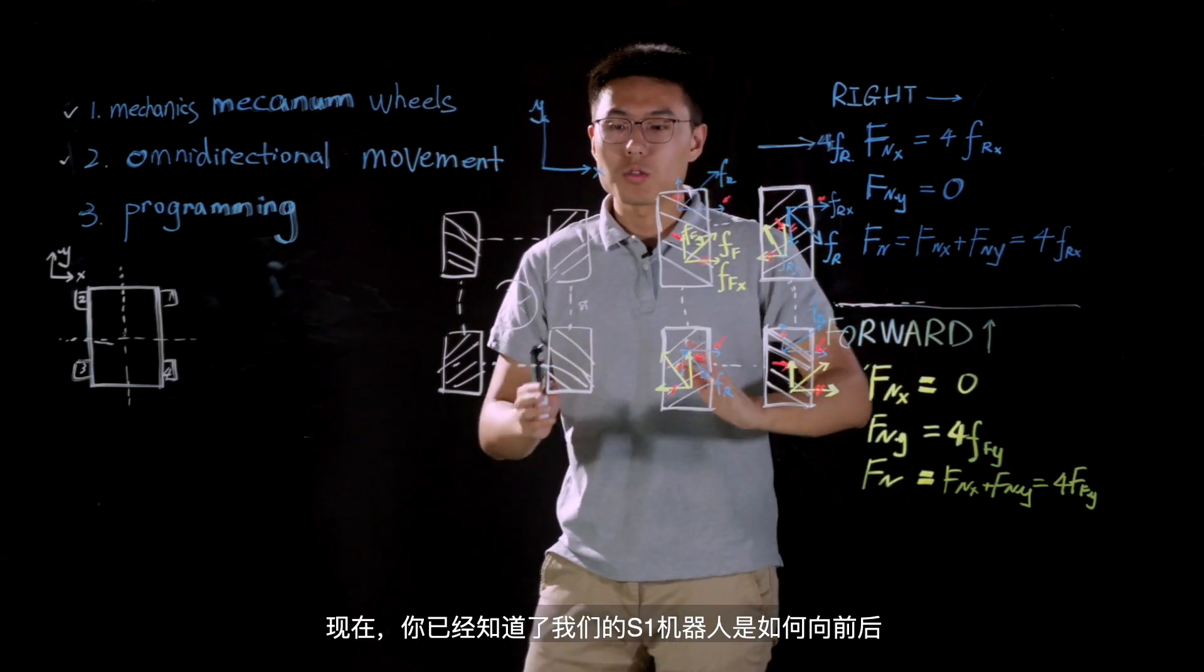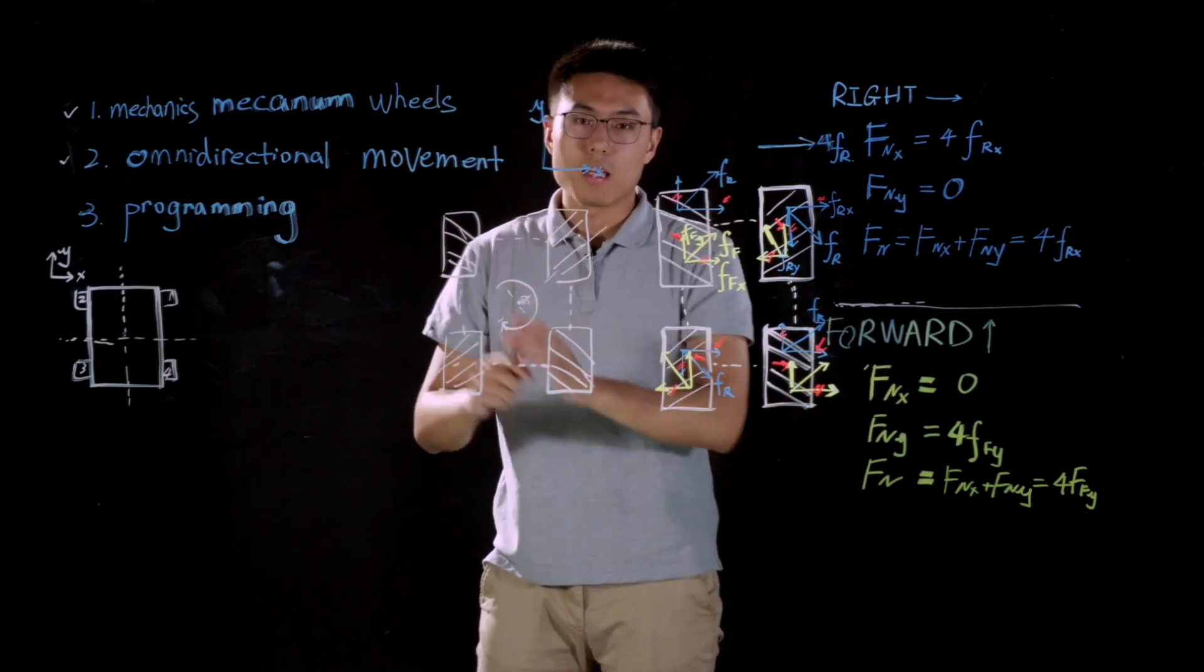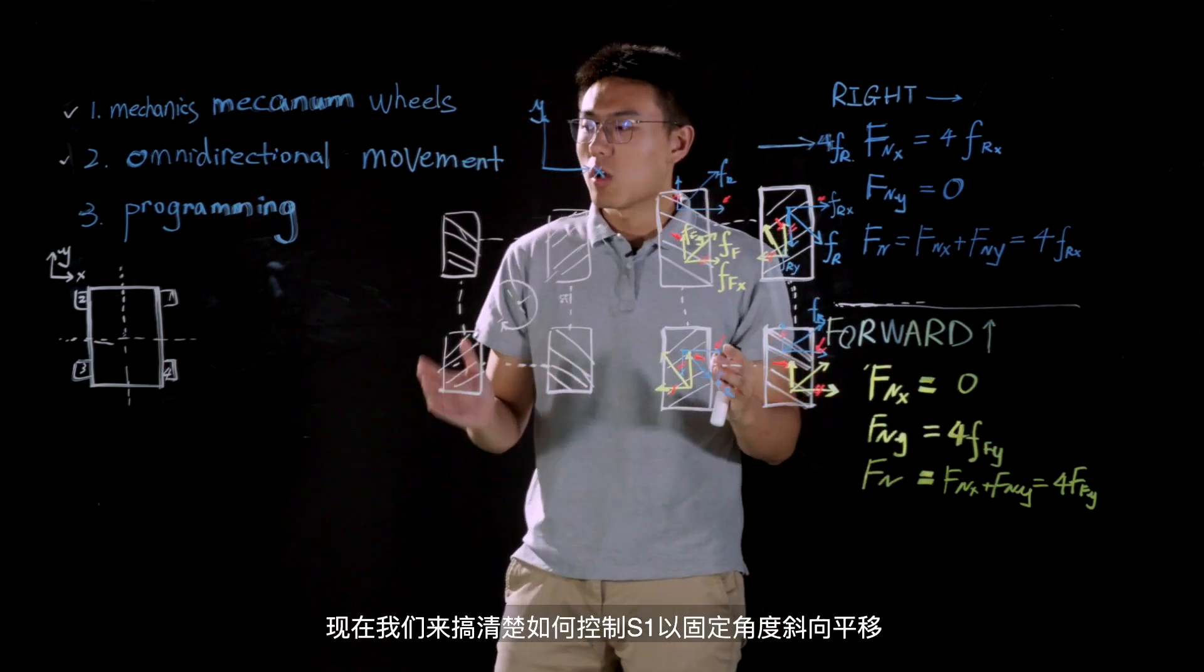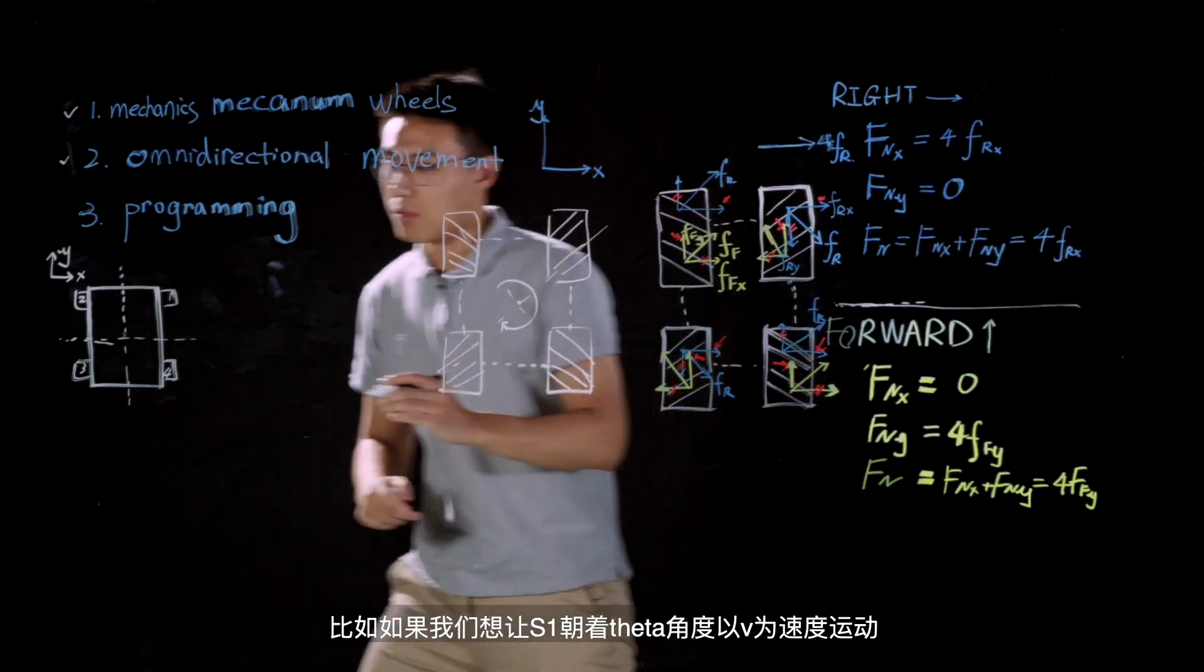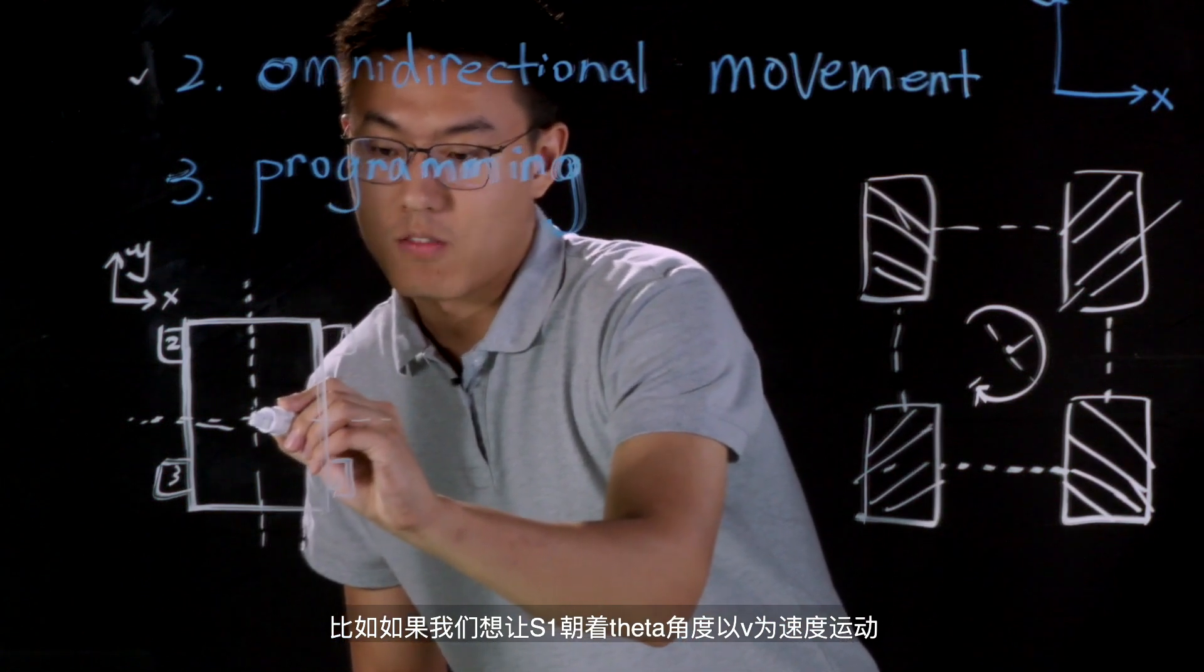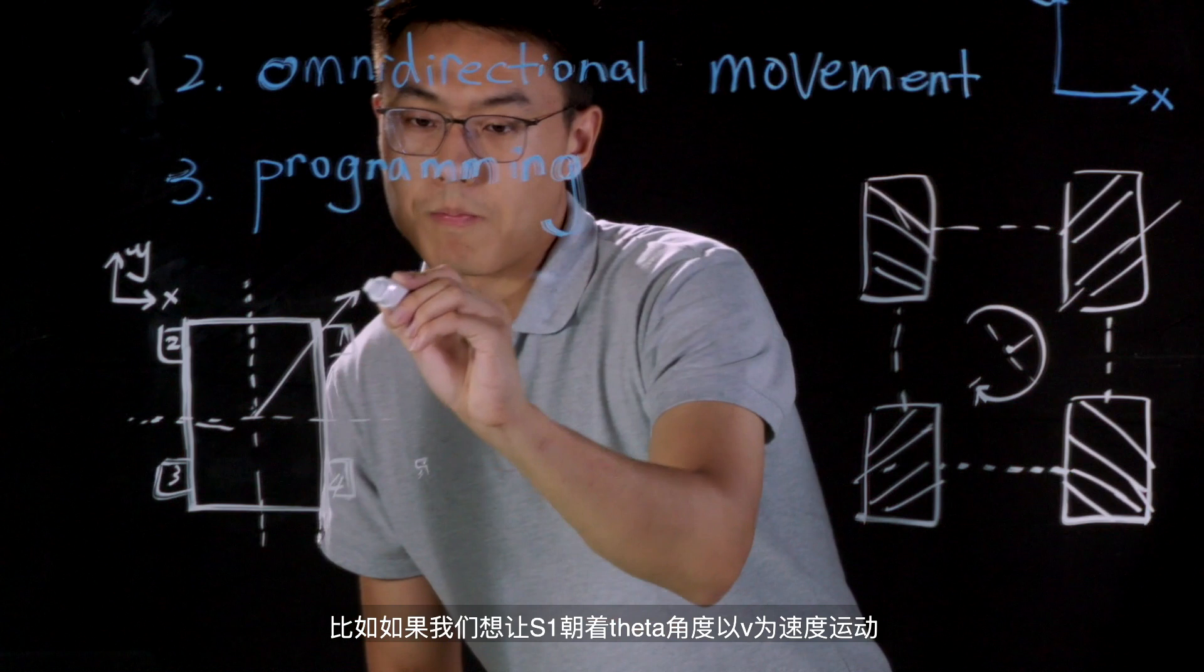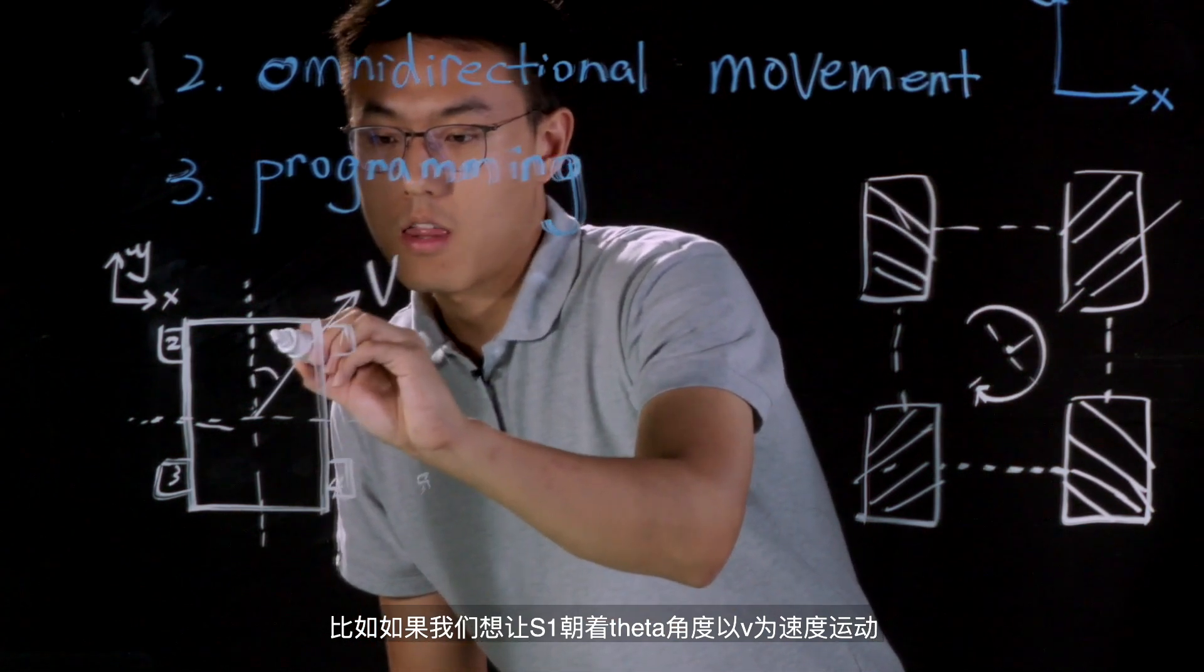Great. I believe you may already know how to control S1 to move forward, backward, slide right and left. Now, let's find out how to make S1 to move obliquely at a certain angle. For example, if we want S1 to move obliquely with the velocity V at an angle of θ.